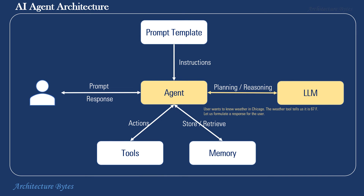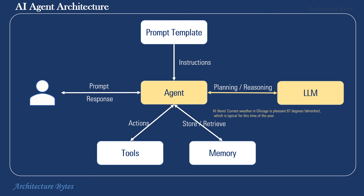The response from the tool is received by the agent, and it passes on this information to the LLM to formulate a response for the end user. The LLM responds with: 'Hi there, current weather in Chicago is a pleasant 67 degrees Fahrenheit, which is typical for this time of the year.' And this response is returned to the end user. So that was the overall agent flow.